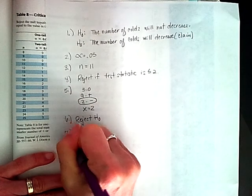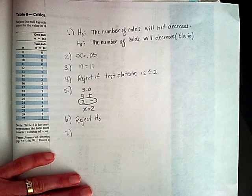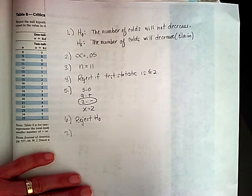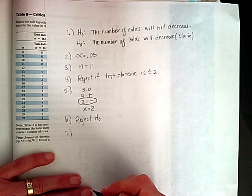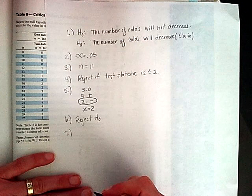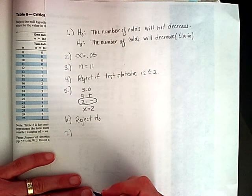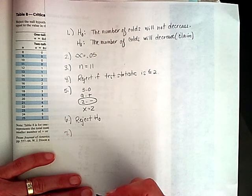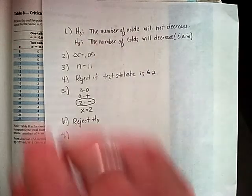Therefore, we can say there is enough evidence to support the claim that the new vaccine will decrease the number of colds in adults. Again, because we're rejecting, we have that 5% chance of a type 1 error.